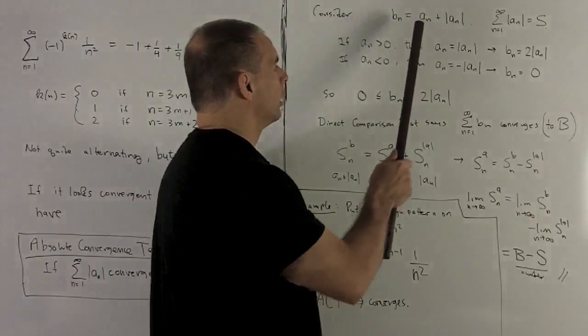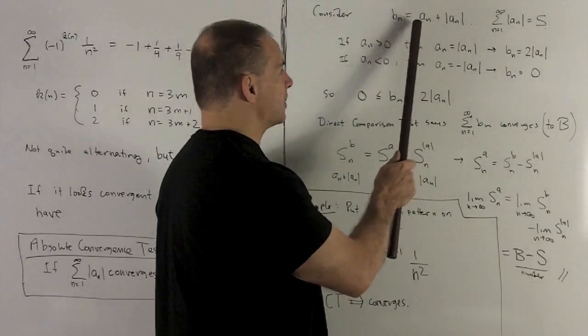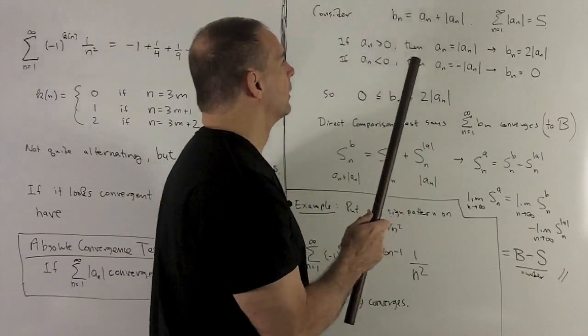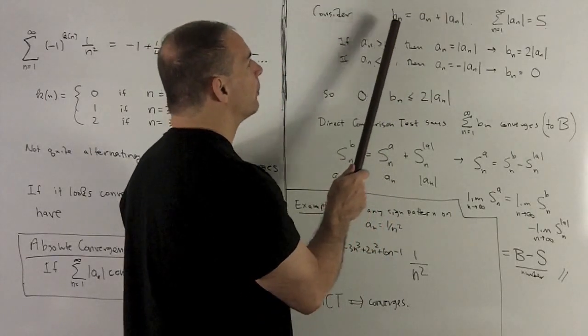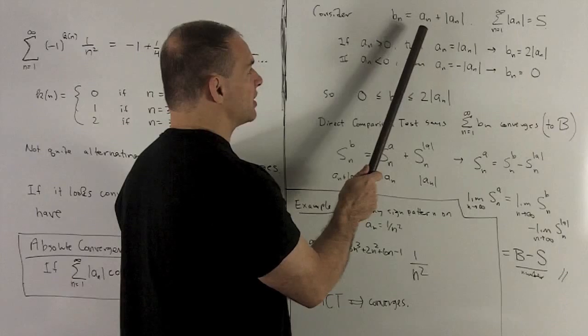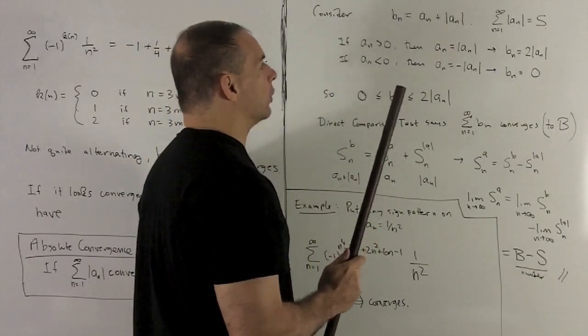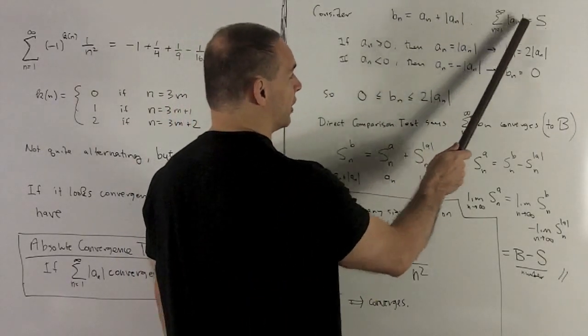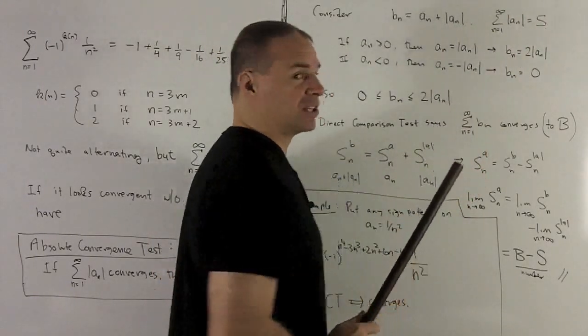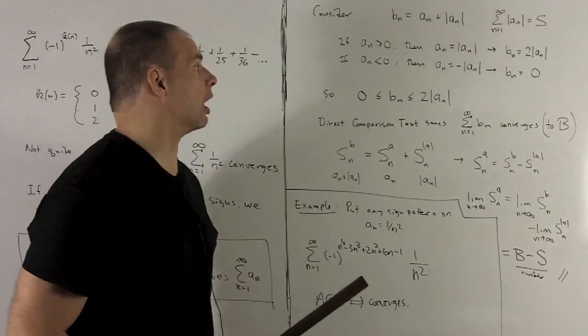Now note, here a sub n is not necessarily positive. So our sequence, we're going to combine the minus signs into it. So what I'm going to have is, I'm going to start with b sub n, which is just the nth term of the sequence, plus its absolute value. We also have that the series of the absolute value of a sub n converges. So let's say that that sum is equal to s. I'll need that later on.